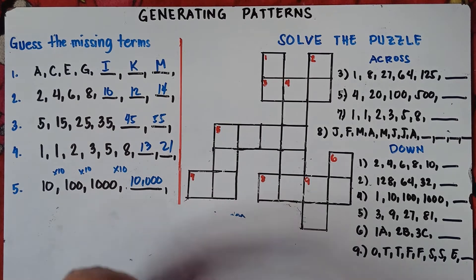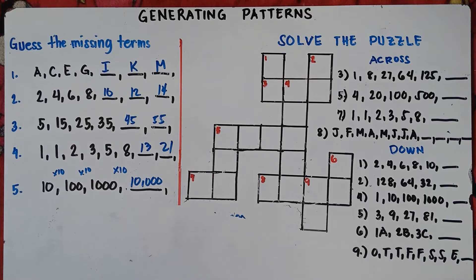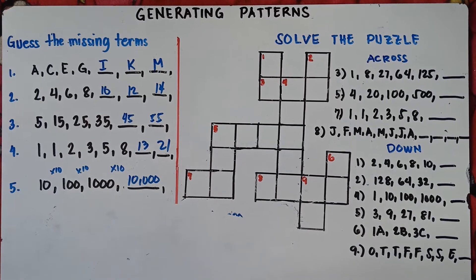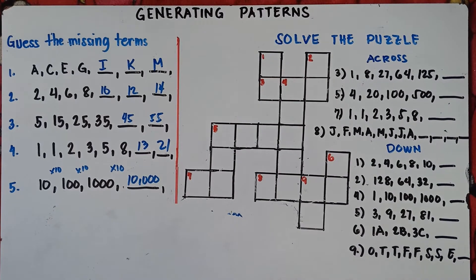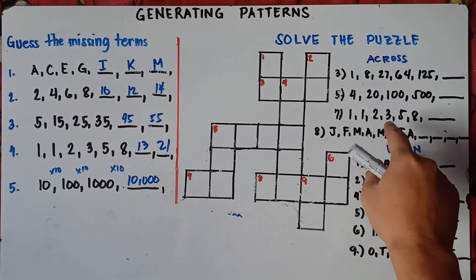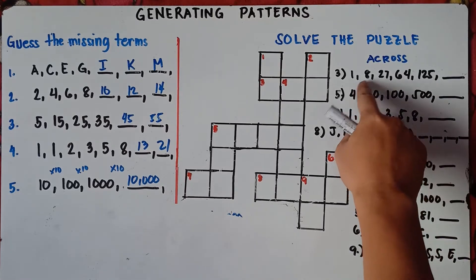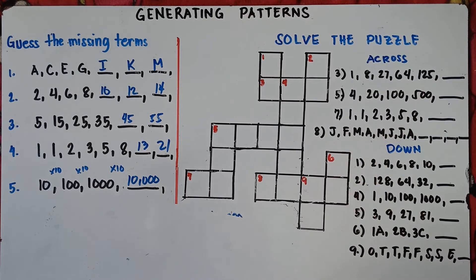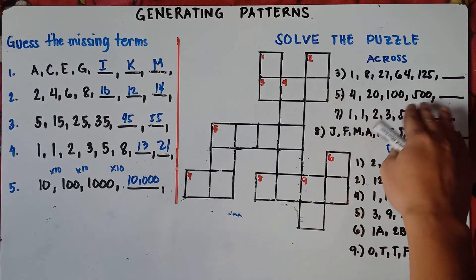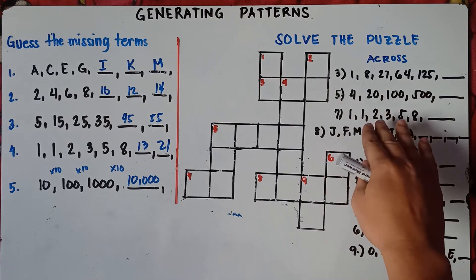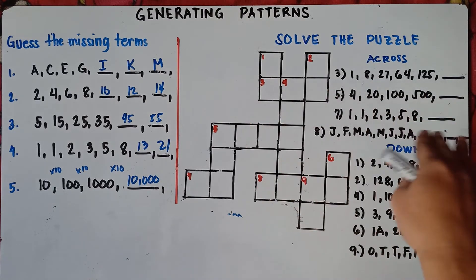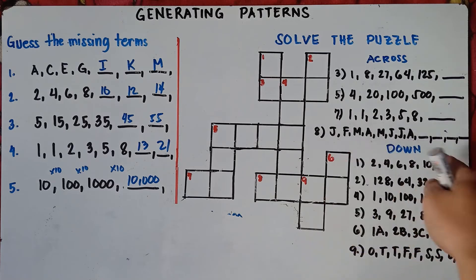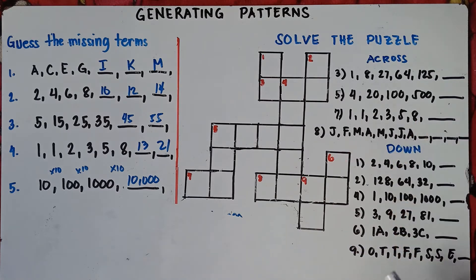Now let's try the puzzle. For number 1 across, we have 1, 8, 27, 64. Across means we answer horizontally, and down means vertically.